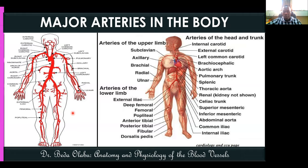Clinically important questions include naming arteries supplying specific organs — for example, the renal artery for the kidney and the pulmonary artery for the lungs. You should also know where to feel arterial pulsations in a patient, whether to estimate cardiac rate, confirm signs of life, or prepare for a clinical procedure.